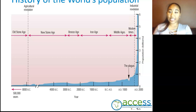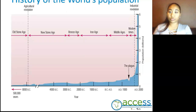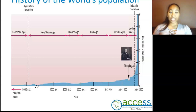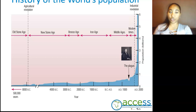It was later that Thomas Malthus put forward his hypothesis, which stated that human population would grow exponentially while agricultural production would grow linearly. Eventually, the human population would exceed the agricultural production, resulting in a population crash.